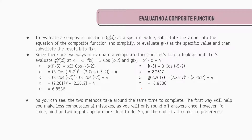Now that we know how to determine a composite of a function, we need to talk about evaluating it. To evaluate a composite function f(g(x)) at a specific value, we can either substitute the value into the equation of the composite function and simplify, or we can evaluate g(x) at the specific value and then substitute the result into f(x). Since there are two ways, let's take a look at both.